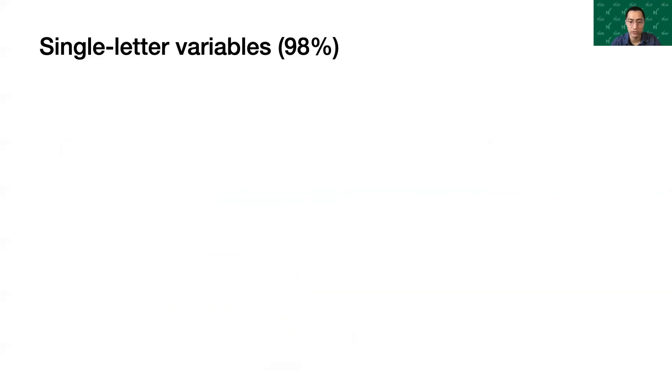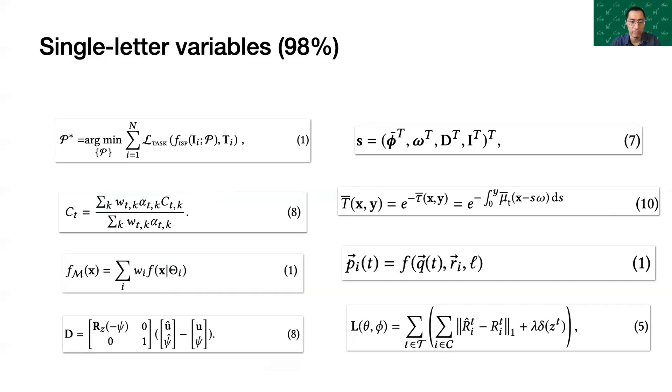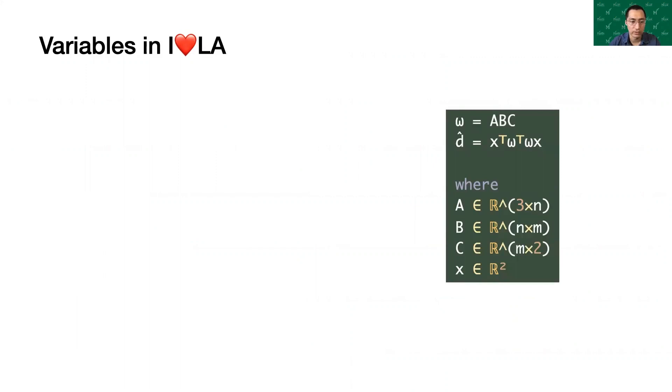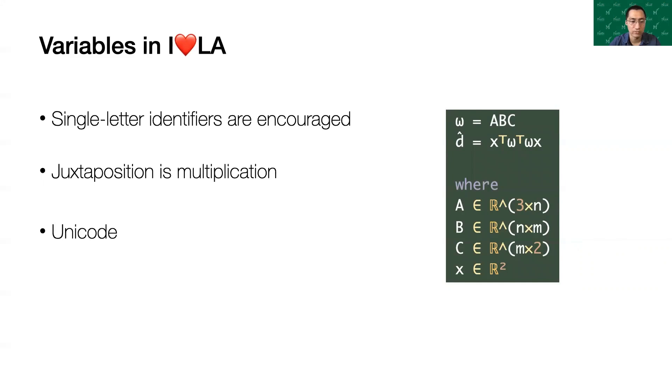Although when programming we are encouraged to use long and descriptive variable names, it's almost unheard of in conventionally written math. Single letter variables prevent ambiguity during multiplication, which is implied by juxtaposing or placing two variables side by side. Unlike in traditional programming languages, single letter variables in math have decorations like you would see with Unicode. I❤LA adopts these ideas to look and feel like conventionally written math.